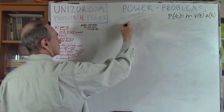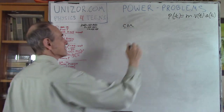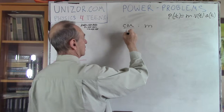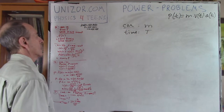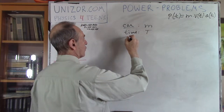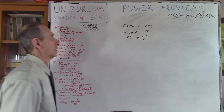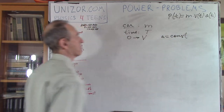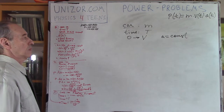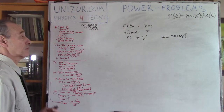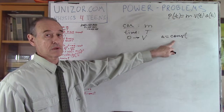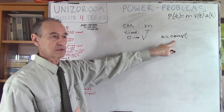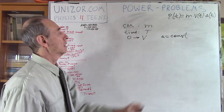Problem number one: we have a car with mass m. During time T it accelerates from 0 to maximum speed V with constant acceleration. I have two questions: what is the power as a function of time? The acceleration is constant, but the power may or may not be constant — we will find out what power is required to maintain constant acceleration. Spoiler: power will not be constant.